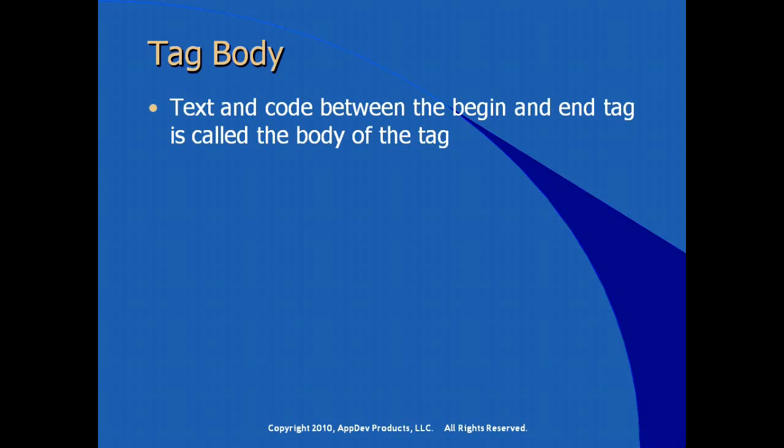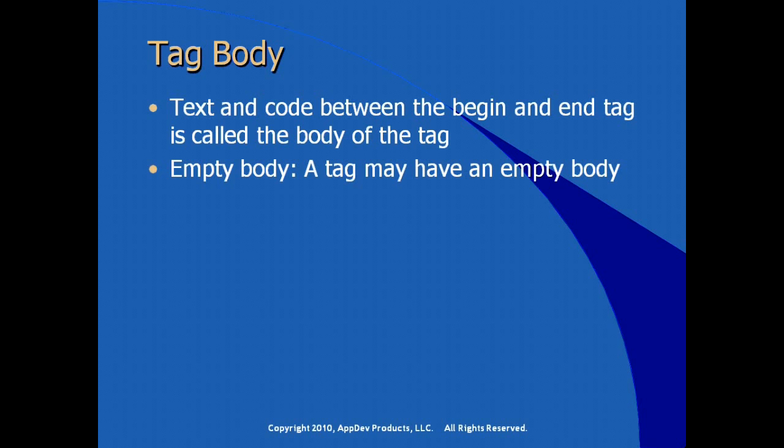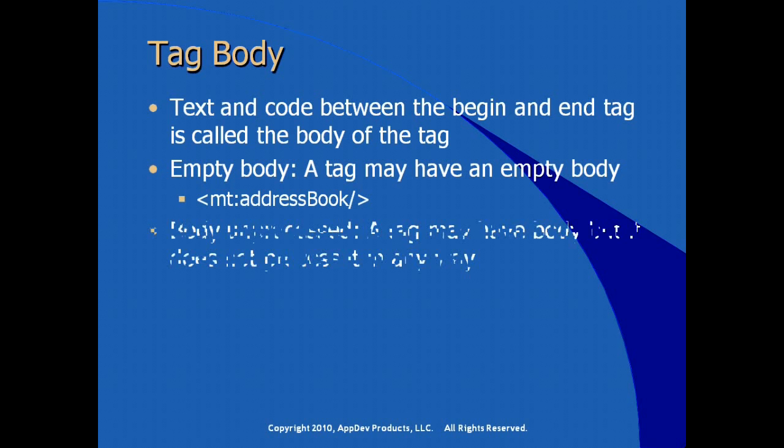What is tag body? Any text or code between the begin tag and the end tag is what's called the body of a tag. Empty body is just what it says — a tag that has no body, or the body is empty. We've seen this with other JSP tags where the tag is a self-closing tag. You also have the option to define a tag where the body is considered unprocessed — the tag may contain a body, but the tag doesn't process it in any way.